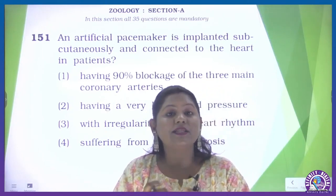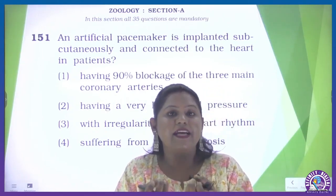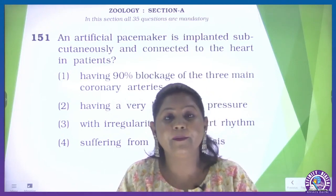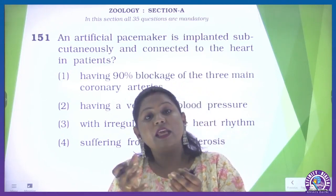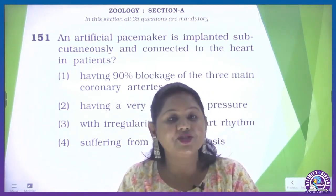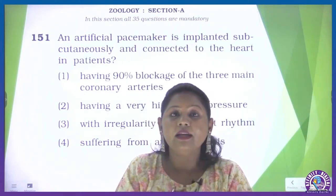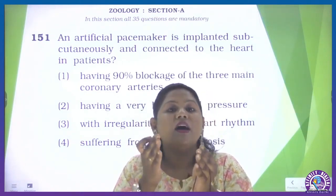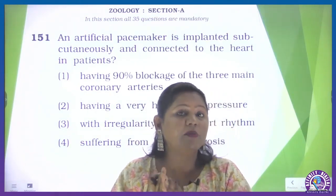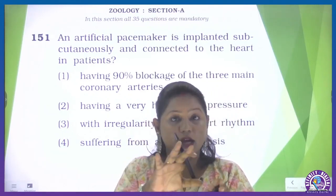But in the heart, when there is no impulse generated by the SA node, or the AV node is not able to catch it properly, what happens in the heart? There is a rhythm irregularity. What is the name of the condition? That is arrhythmia.